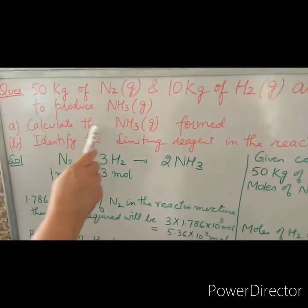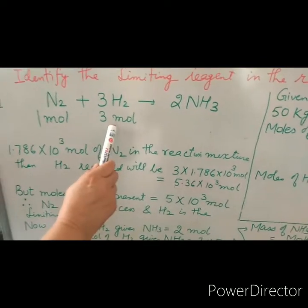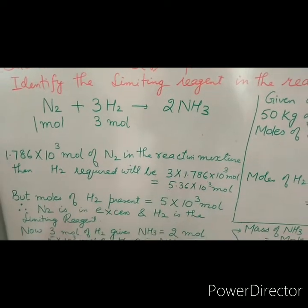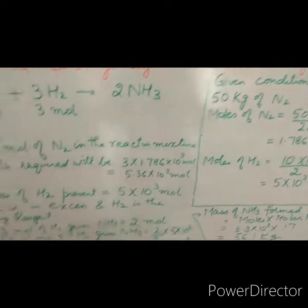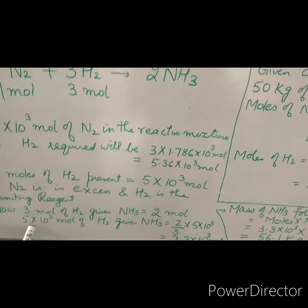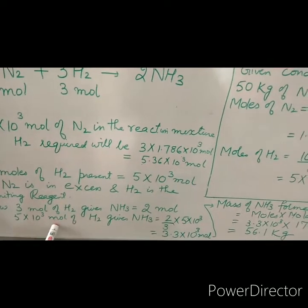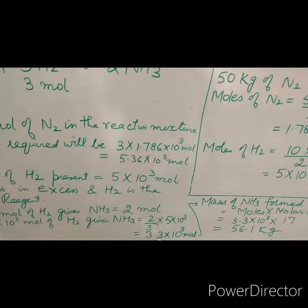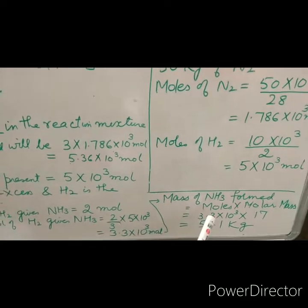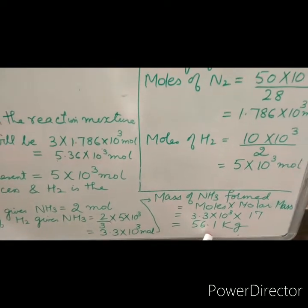Now calculate the ammonia formed. From the balanced chemical equation, 3 moles of hydrogen gives 2 moles of ammonia. If we have 5 × 10³ moles of hydrogen, then ammonia formed will be (2/3) × 5 × 10³ = 3.3 × 10³ moles. To calculate the mass of ammonia, we multiply moles by molar mass, giving 56.1 kg of ammonia.